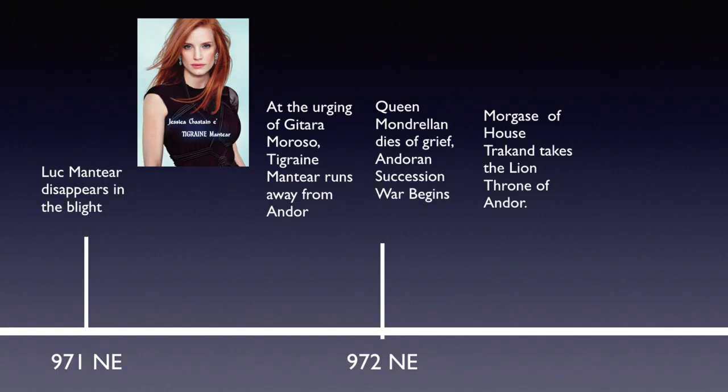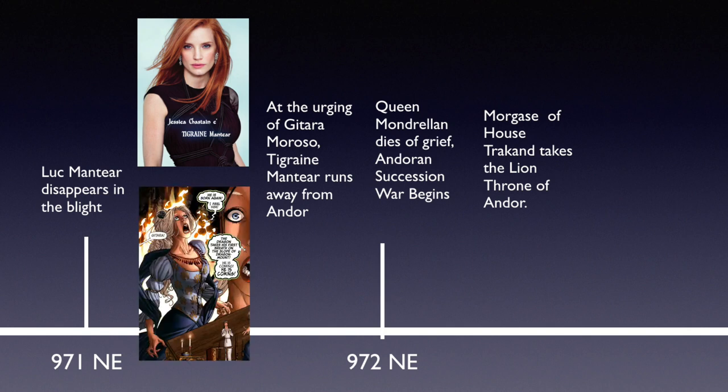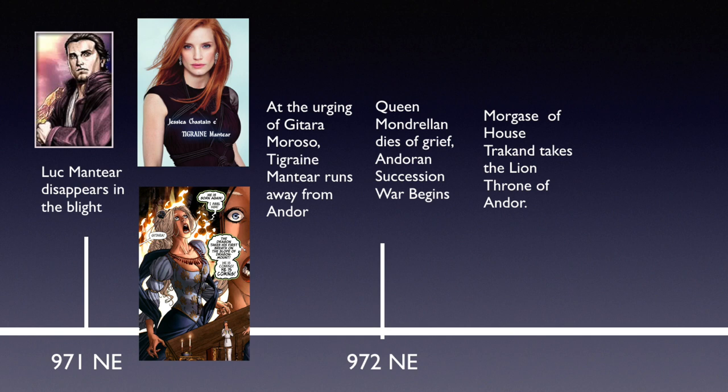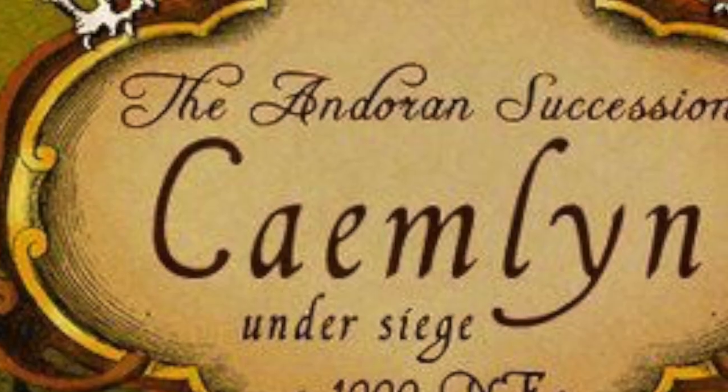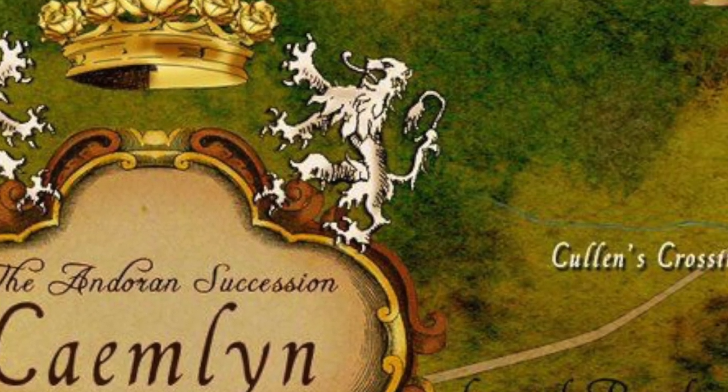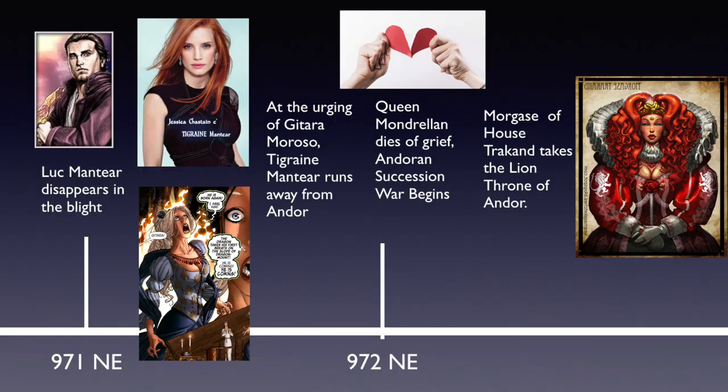The recent history of Andor at the start of the Eye of the World: Andor has gone through a change in the ruling family. Tigraine, the daughter of Queen Mordrelyn Mantiar, ran away due to the advice of Aes Sedai Gitarra Morosa. Her disappearance and the earlier death of her brother Luc caused Queen Mordrelyn to die of despair, starting a succession war in Andor, with Morgase of House Trakand taking the throne, where she rules until the start of the series.